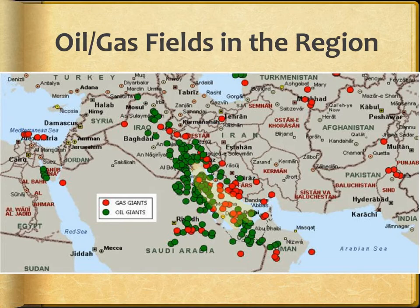You guys know that when we go to the gas station to fill up our cars, that gas is created through a process that breaks down oil. Without oil from this region, the United States would face a huge gas shortage. Think about how difficult it would be if you couldn't just run to the gas station and fill your tank anytime you needed to go somewhere — that's what we'd be facing if we didn't have access to the gas and oil from this region.